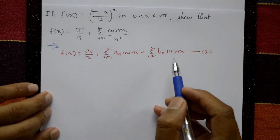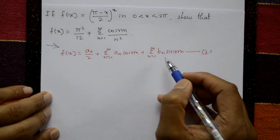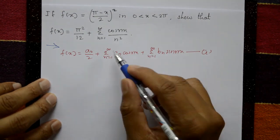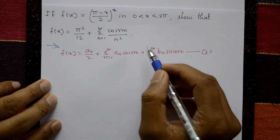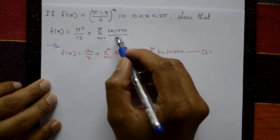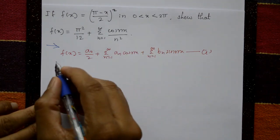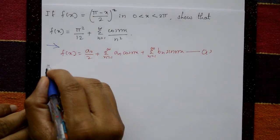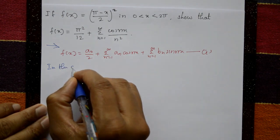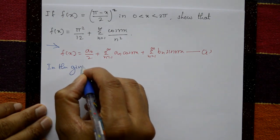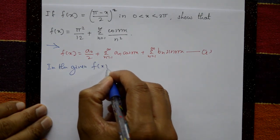To find this series, we need the values of a₀, aₙ, and bₙ. Before finding these, first check whether the function is even or odd by examining the given f of x.